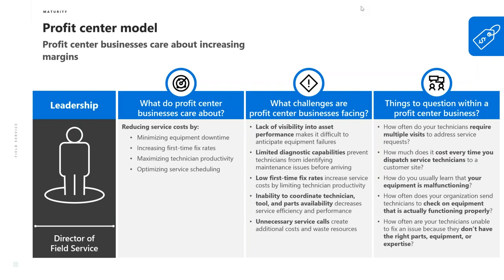Looking at the profit center model, they focus on reducing service costs by minimizing downtime, increasing fix rates, maximizing scheduling, and maximizing productivity of technicians. Challenges profit center businesses face include visibility and performance issues, low fix rates, limited diagnostic capabilities, inability to coordinate with technicians, and unnecessary service calls. Key questions include: How many times does it cost each time you dispatch a service technician? Is your equipment malfunctioning? And do you send people out to check on equipment that's actually functioning properly?